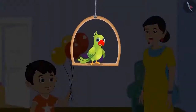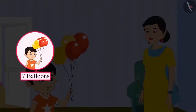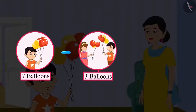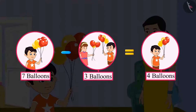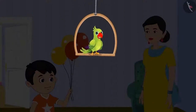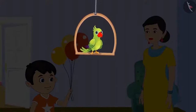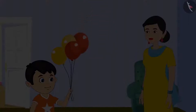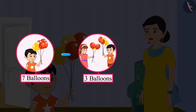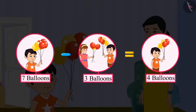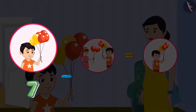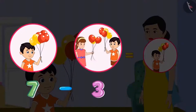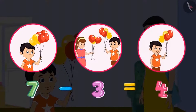So friends, in this example, you saw that if from seven balloons we subtract three balloons, then four balloons are left. Let us see how to write this in a systematic way. On subtracting three from seven, four are left. Seven minus three equals four.